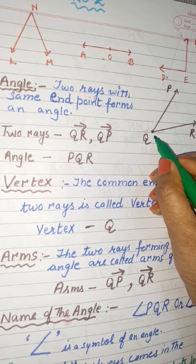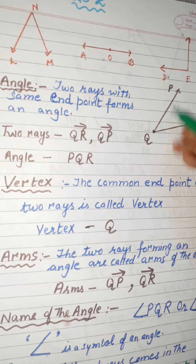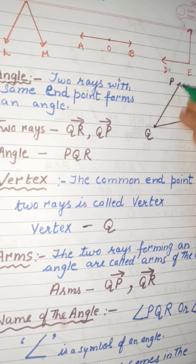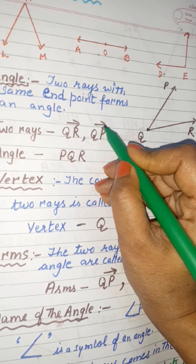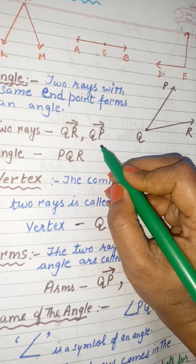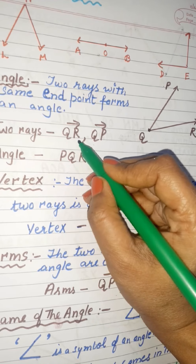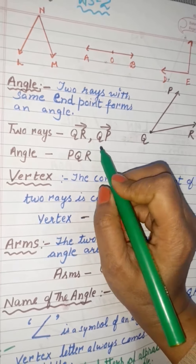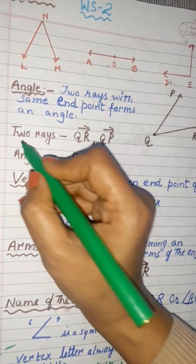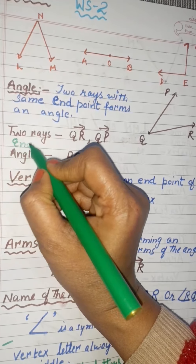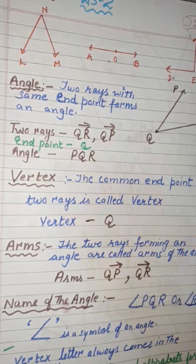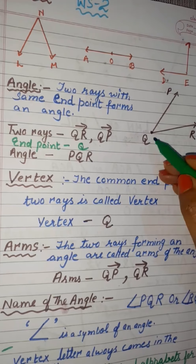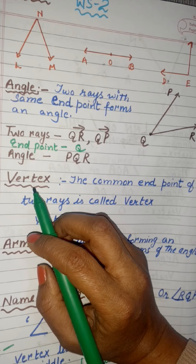In this example the common end point is Q. The first ray is QP — we write QP with an arrow, which is the sign of a ray. The second ray is QR. So the two rays are named QP and QR, both having common end point Q. These two rays with the same end point form angle PQR.